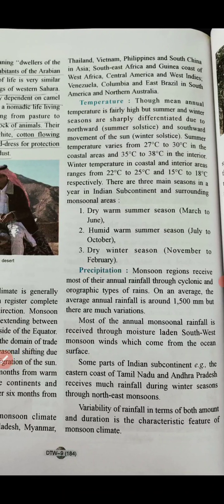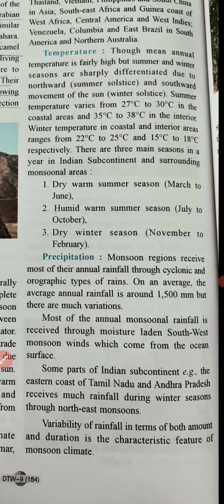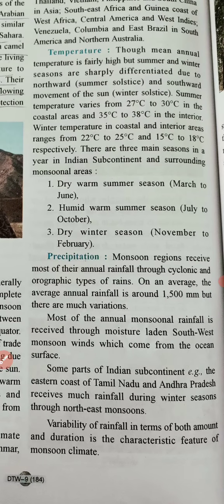There are three main seasons in a year in the Indian subcontinent and surrounding monsoonal areas. First is the dry, warm summer season from March to June. Second is the humid, warm summer season — the rainy or monsoon season — from July to October. Third is the dry winter season from November to February.